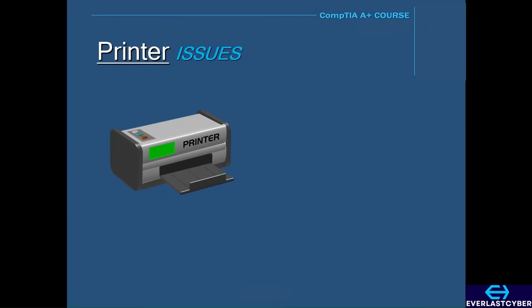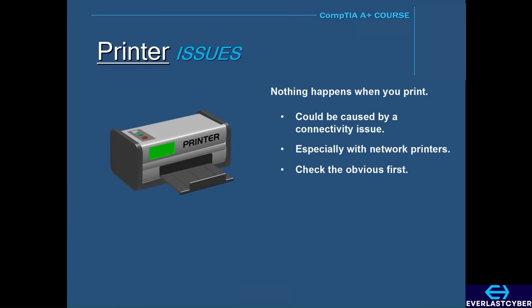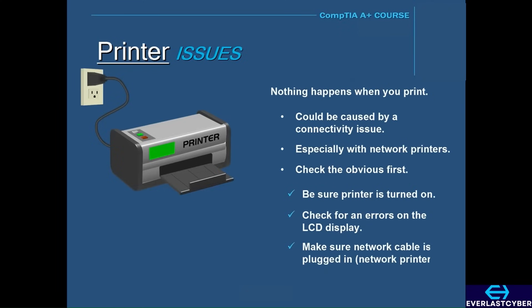Often, when you try to print something and nothing happens, it could be a connectivity issue. Connectivity issues are extremely common, especially when you're dealing with network printers, but the first things to check are the obvious ones. For example, make sure the printer is turned on or check for any errors on the printer's LCD display if it has one. Or if the printer has a wired connection, then make sure that the network cable is connected correctly. You should always check the obvious things first before diving into the more complicated issues, such as seeing if the printer has an actual IP address, because doing the simple and obvious things first will save you a lot of time.